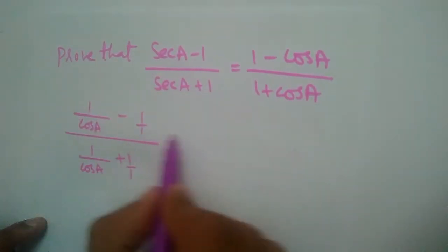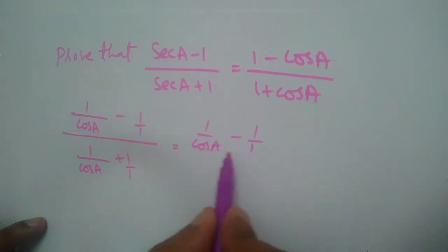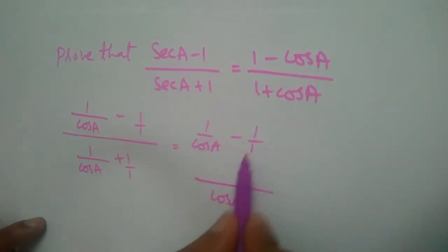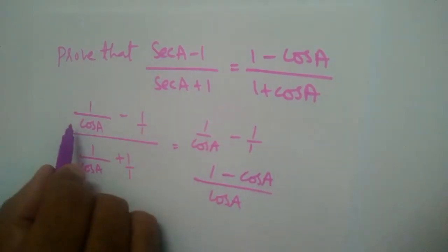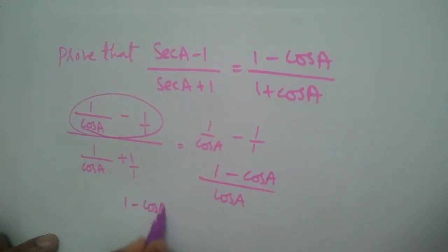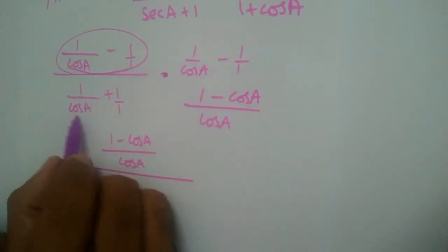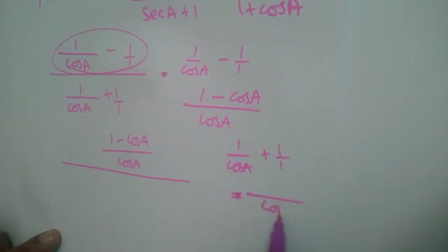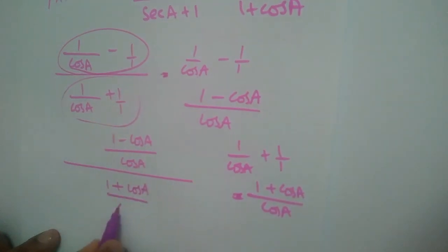Let us simplify the numerator: 1/cos a minus 1/1. The denominators are different, so we get (1 - cos a)/cos a. Similarly, the denominator is 1/cos a plus 1/1, which gives us (1 + cos a)/cos a.